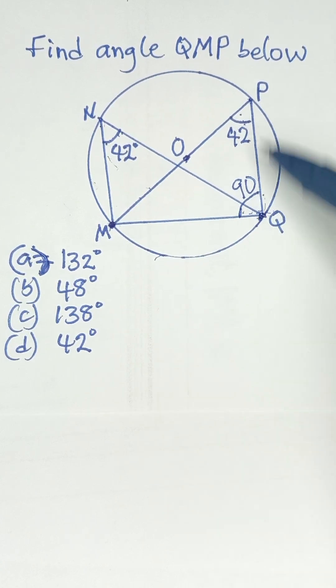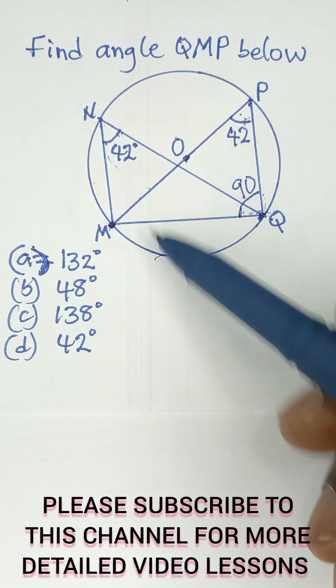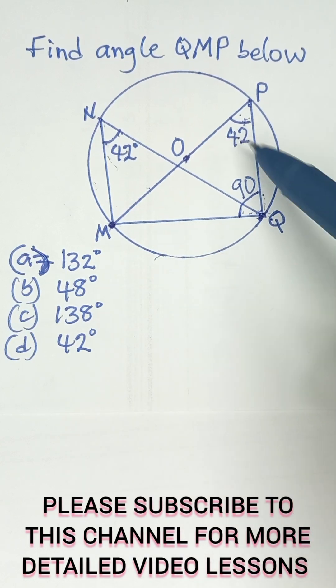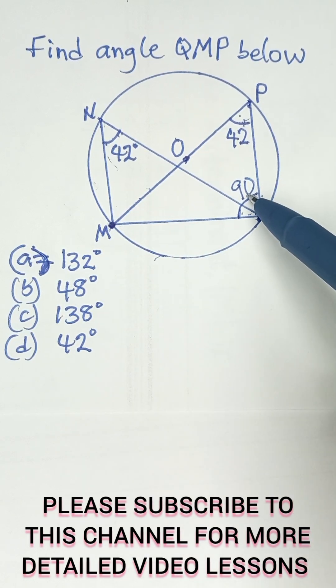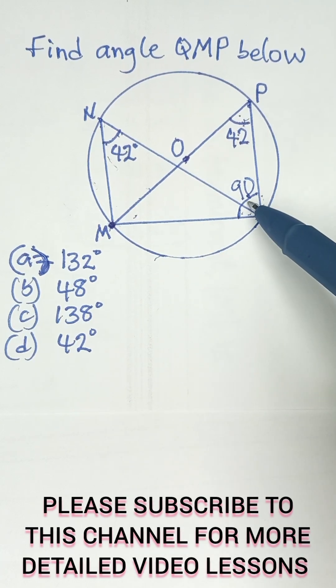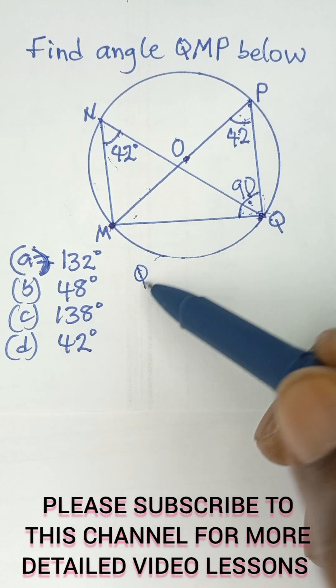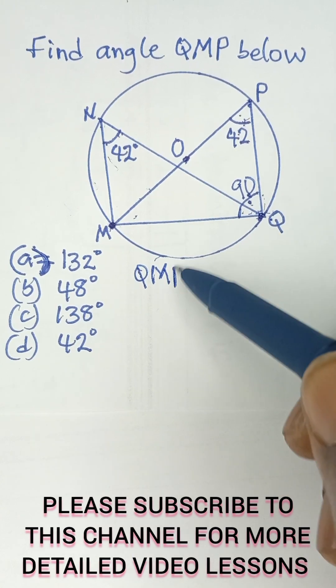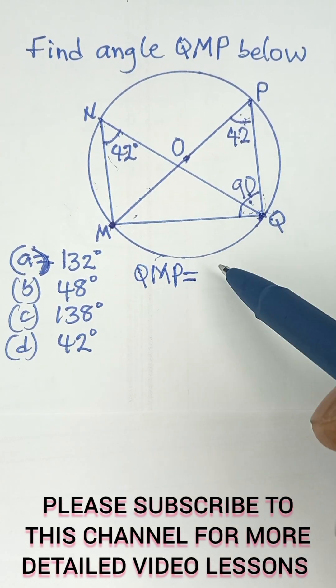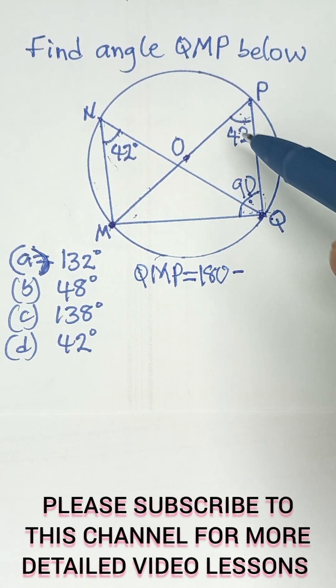Now, looking at this full triangle, we can now find QMP. So QMP plus 42 plus 90 will give us 180 because sum of angles in a triangle is 180. So that means QMP will be equal to 180 minus the sum of these two.